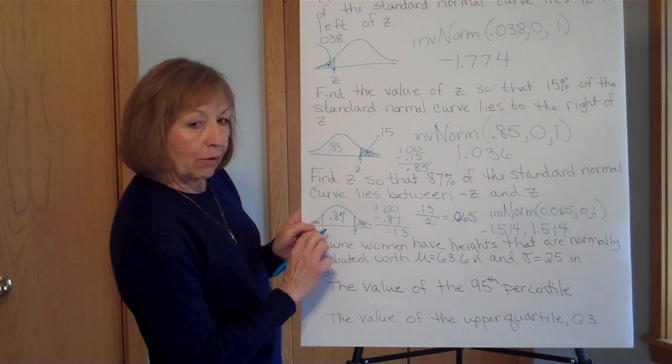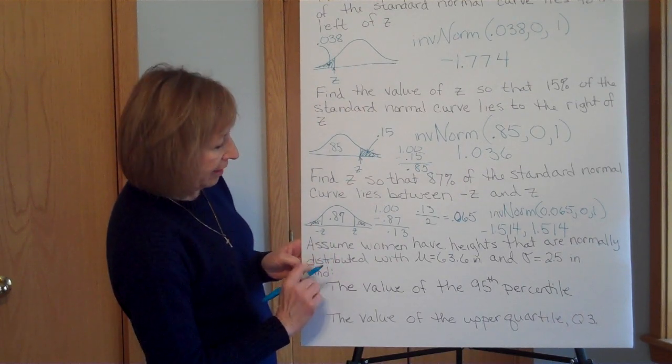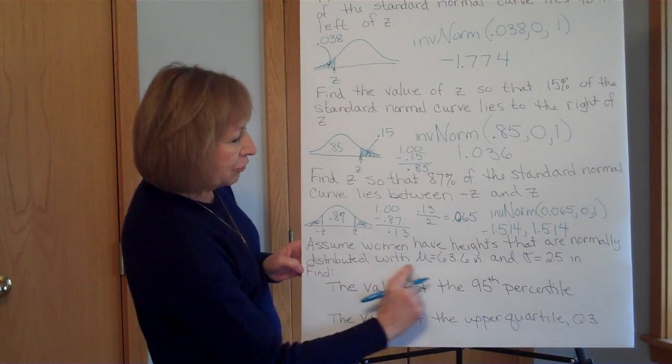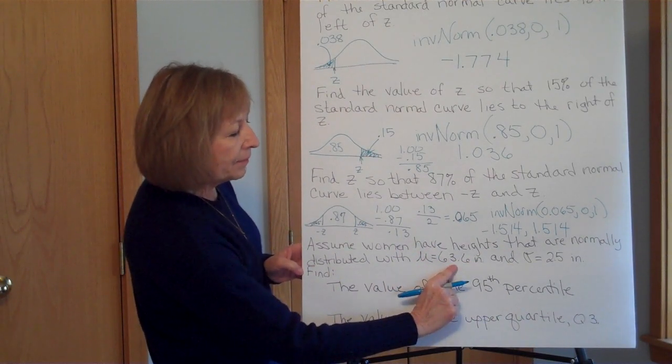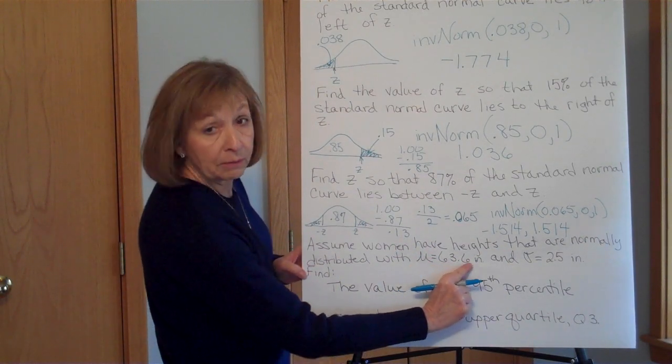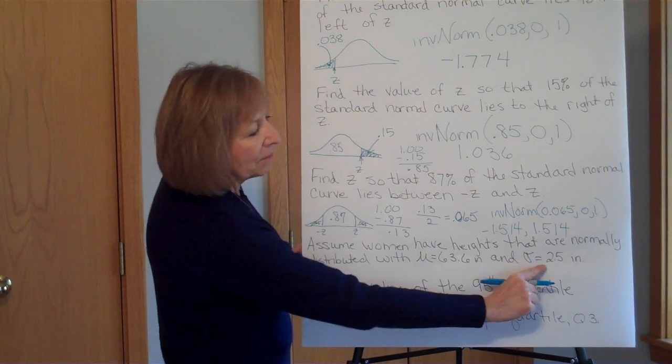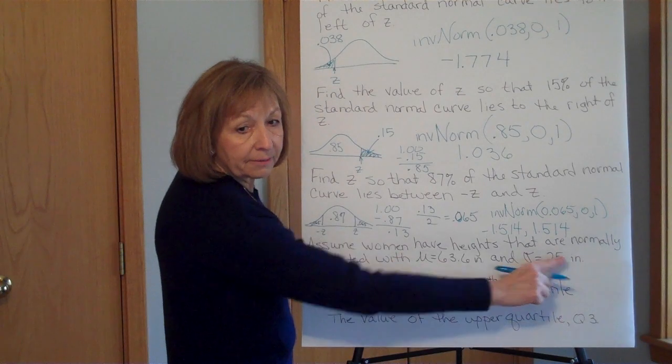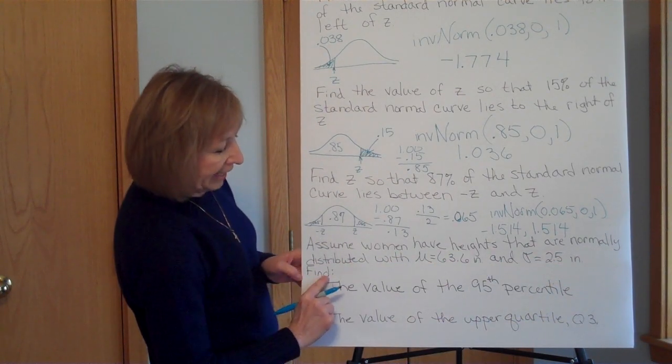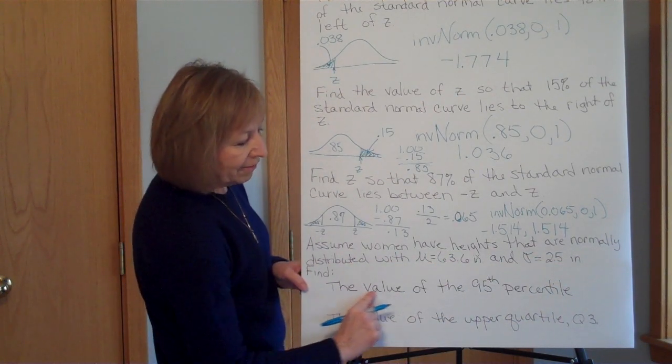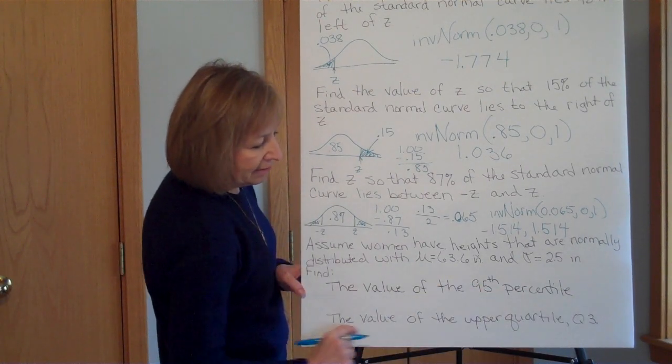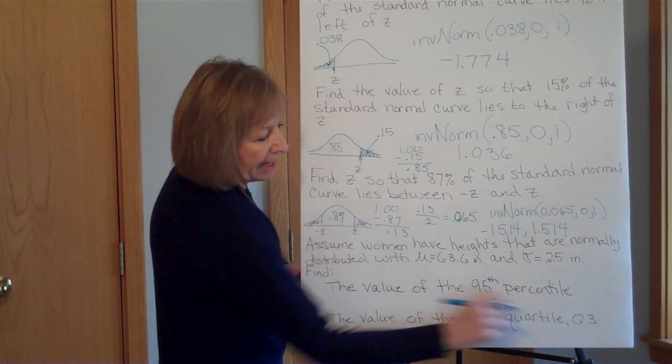Now, how about the work with assuming that women have heights that are normally distributed with the population mean being 63.6 inches and the population standard deviation being 2.5 inches. Find two different things, the value of the 95th percentile and the value of the upper quartile.